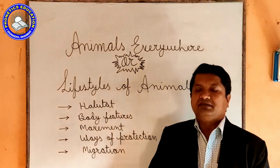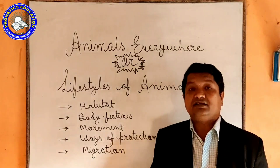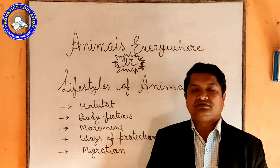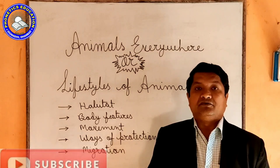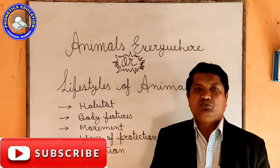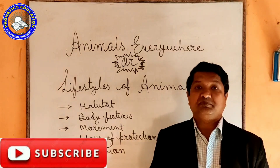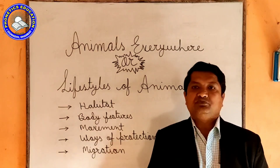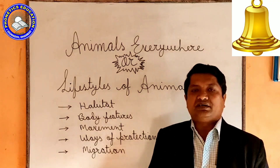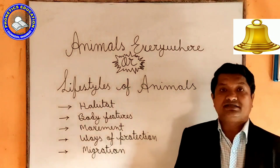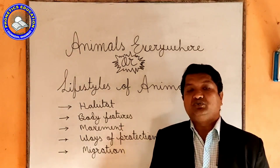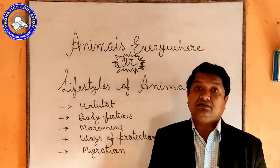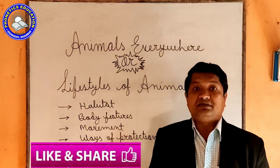Next we will discuss migration — migration that means asthaan antarang. Asthaan antarang: many animals move from one place to another due to harsh climate, food, or survival. We know of Arctic Terns and Siberian Cranes, which travel very far from the north. If we look at the Arctic Tern, it migrates from the Arctic to the Antarctic region — a distance of about 15,000 km.